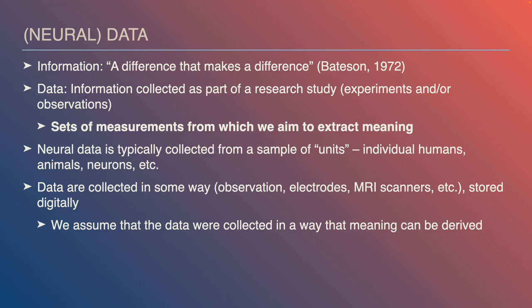Neural data is typically collected from a sample of units — individual humans, animals, neurons, etc. — through observation or via electrodes, MRI scanners, or button presses, and stored digitally. We assume the data were collected using good scientific practices: systematic procedures and storage relatively free from error. In this course we focus on what we do with data after we've collected it, not how we collect it. But as a data scientist, it's on you to understand the nature of the data you're working with.